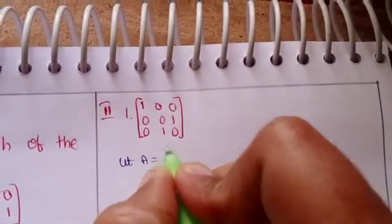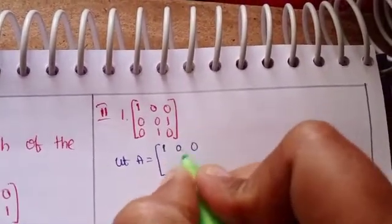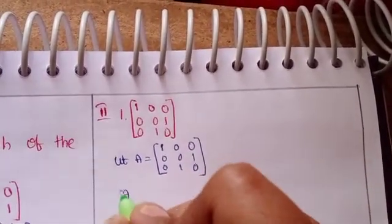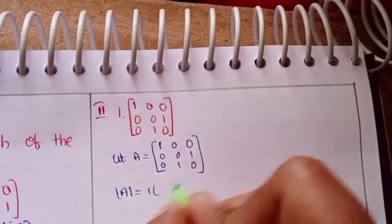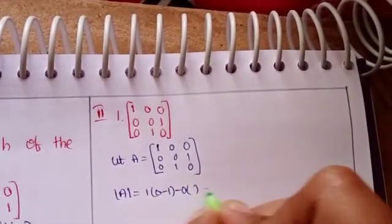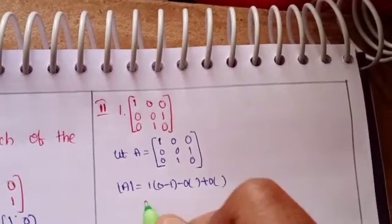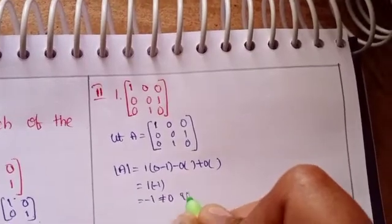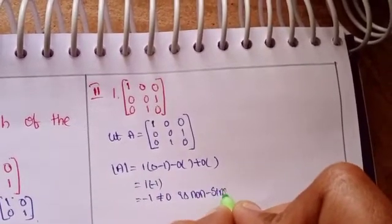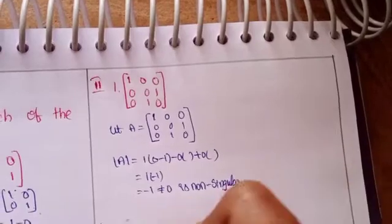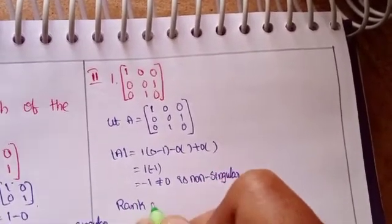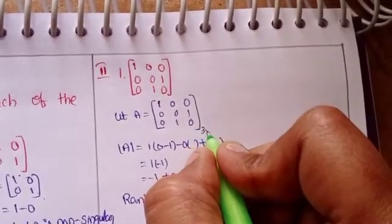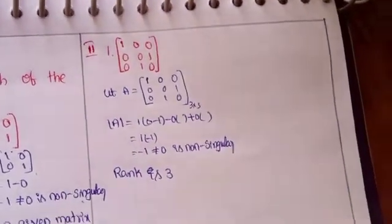Now for the second section, first problem: let A equal to the 4x4 matrix with entries 1, 0, 0, 0 / 0, 1, 0, 1 / 0, 1, 0, 0 / 0, 0, 0, 0. This is a 3x3 effective matrix, so the rank is 3.